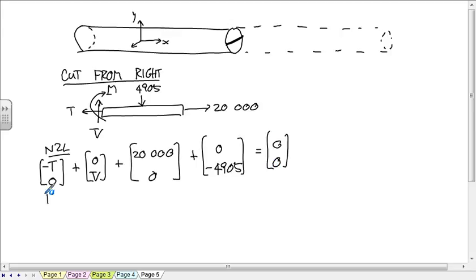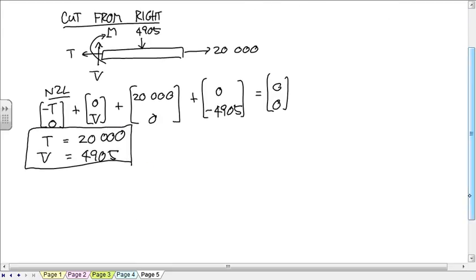So you get a tension of 20,000 and a shear force of positive 4905. This is all we need to calculate the stress tensor at this point. So let's calculate some of those mathematical values that we're going to need to calculate these stresses.